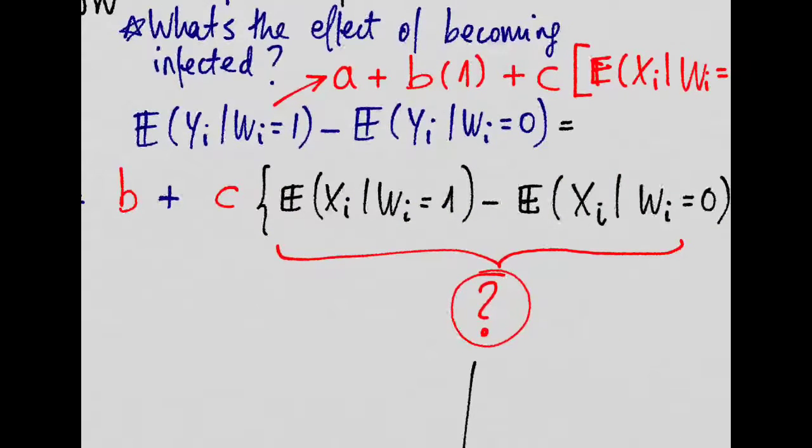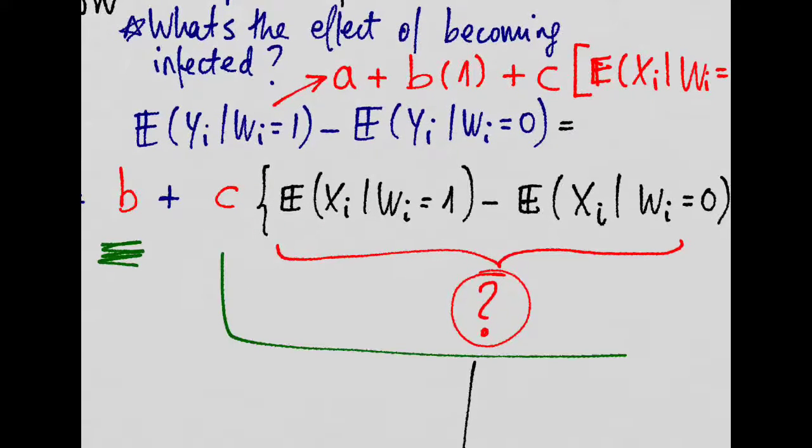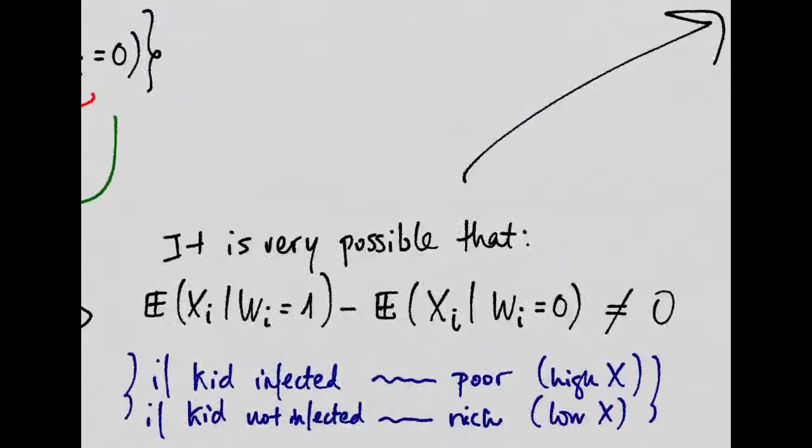Now, since we want to estimate the true effect, this thing here is a problem. This is basically something that we don't know, but we can have the intuition that is biasing the overall estimate. Why? Well, because it's possible, it's very possible, that these two terms don't cancel out to 0.